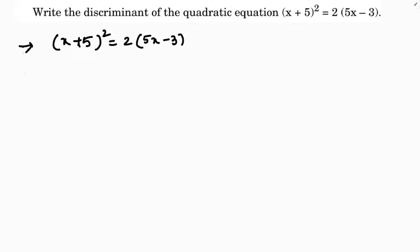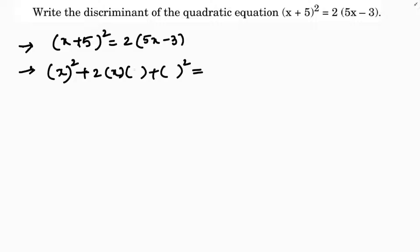On the left side we have an (a + b)² form. Expanding: a² + 2ab + b², where a is x and b is 5, giving x² + 2(x)(5) + 5², which is x² + 10x + 25.